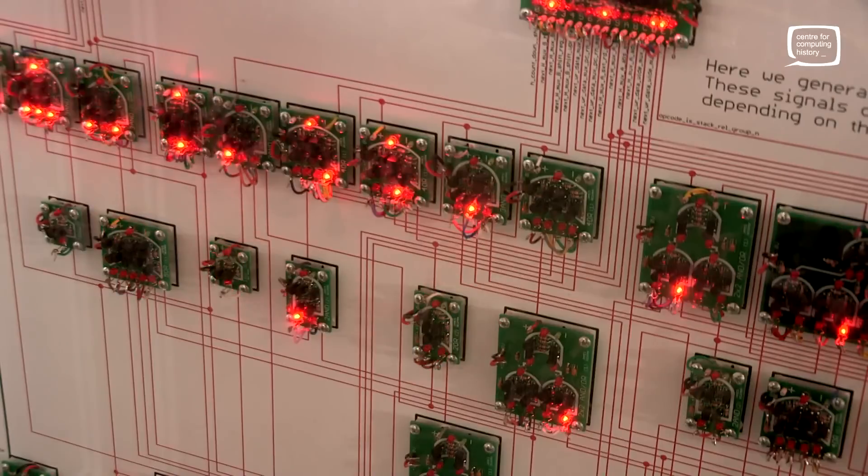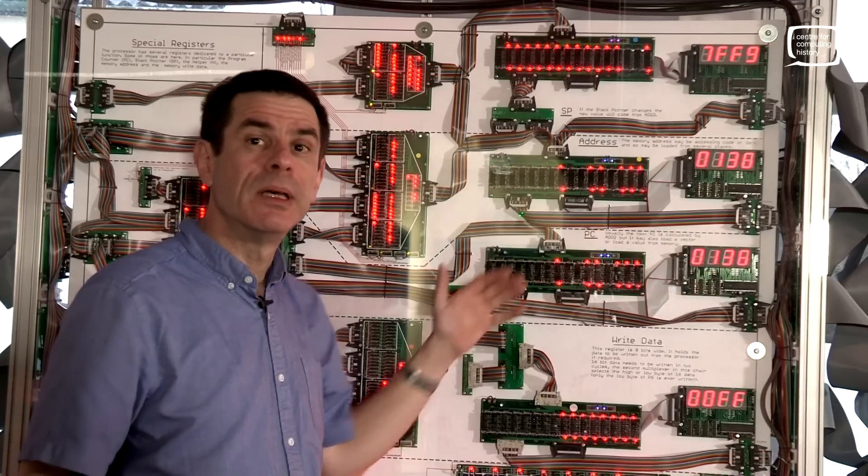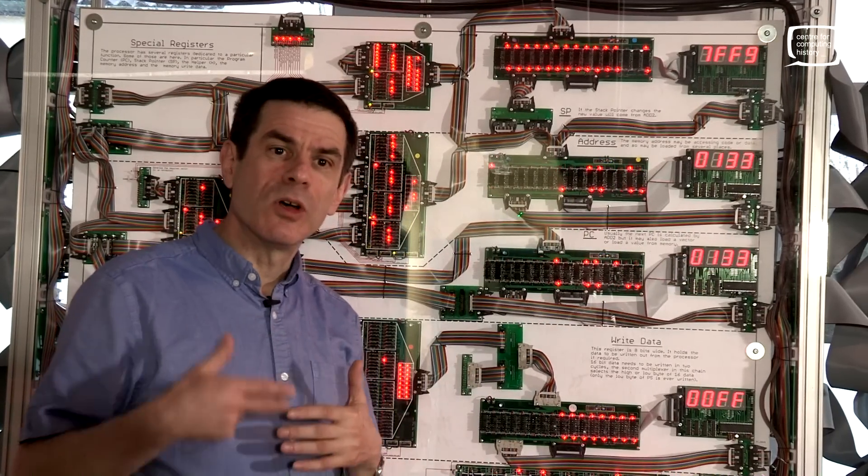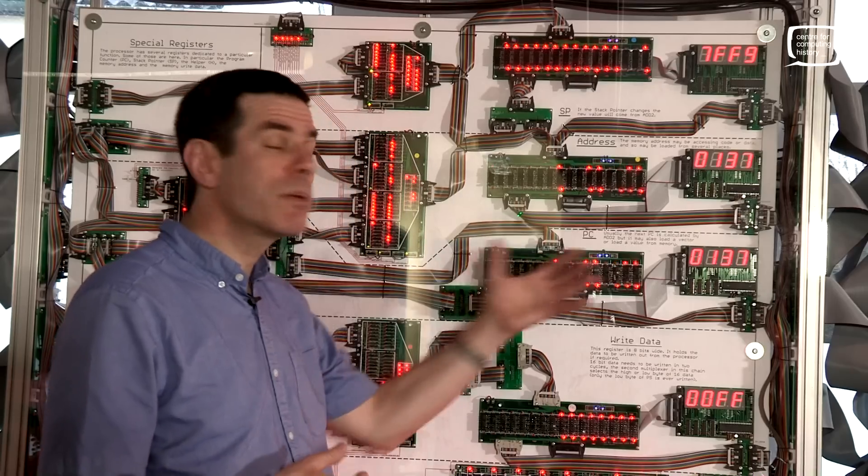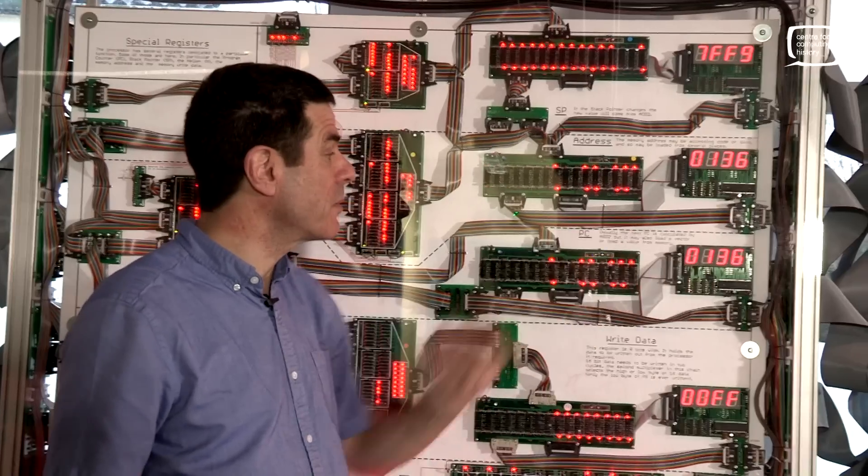And another important register we need to use is the program counter, which is this register here. So I mentioned earlier, a program is a sequence of instructions. And it's the program counter which keeps track of where we are in that sequence of instructions. And you can see it going through a little loop of instructions here as it's counting up and down.